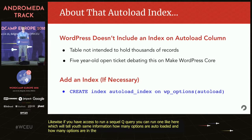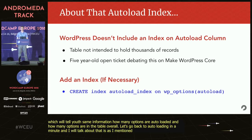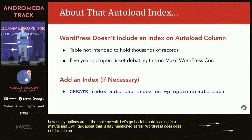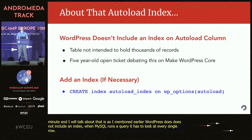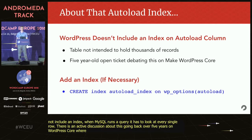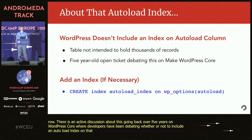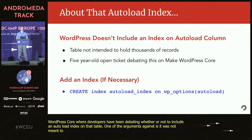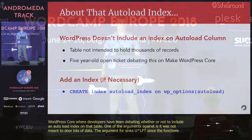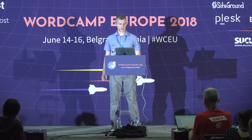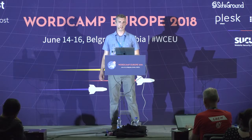Let's go back to autoloading for a minute. WordPress doesn't include an index on the autoload column, so when MySQL runs a query it has to look at every single row to determine whether to return it on every page load. There's an active discussion going back over five years in WordPress core where developers have been debating whether or not to include an autoload index on that table. One argument against is that the table wasn't meant to store tons of data. But an argument for is that since the functions default to autoloading set to yes, it might be worthwhile for scalability.